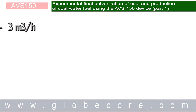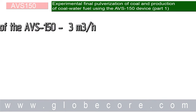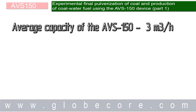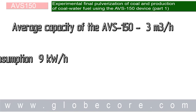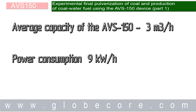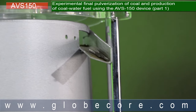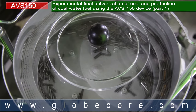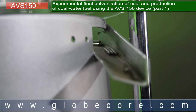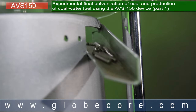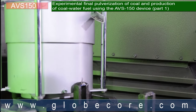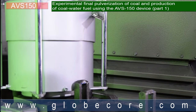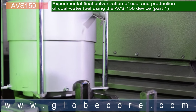The results of the experiment led to the following conclusions. Average capacity of the AVS150 device in a continuous stream will be 3 cubic meters per hour with 9 kWh power consumption. The use of plasticizer is not required due to the intensive mixing in our device. The operation of the devices can be made continuous since additional ferromagnetic particles to replace the worn ones are added automatically by a portioning device.